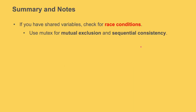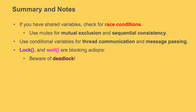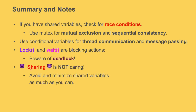Let's summarize what we learned today. If you have shared variables, check for race conditions. Use critical sections with mutex to create mutual exclusion and sequential consistency. Use conditional variables for thread communication and message passing — namely sending notifications. Lock and wait are blocking actions so be aware of deadlock. When it comes to multi-threading, sharing is not caring — avoid and minimize shared variables as much as you can.